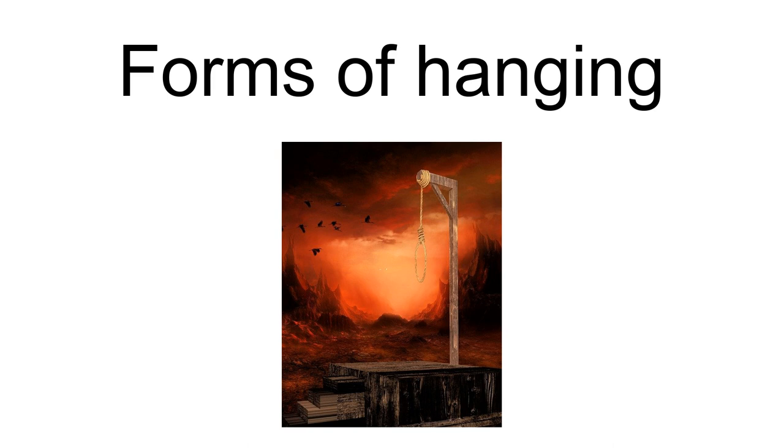The Tyburn gallows, commonly known as Tyburn Tree, was triangular in plan, with three uprights and three cross beams, allowing up to 24 people to be executed simultaneously when all three sides were used. Occasionally, improvised gallows were used, usually by hanging the condemned from a tree or street light. Hangings from such improvised gallows are usually lynchings rather than judicial executions. In Afghanistan, the Taliban used football goals as gallows.